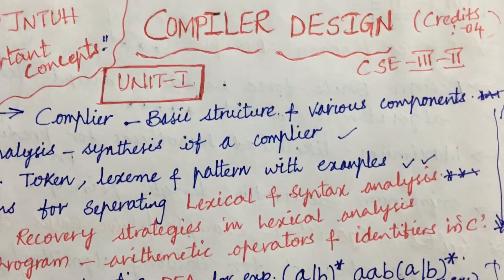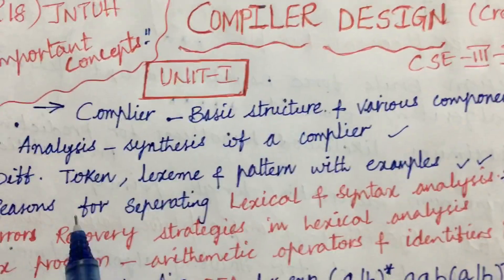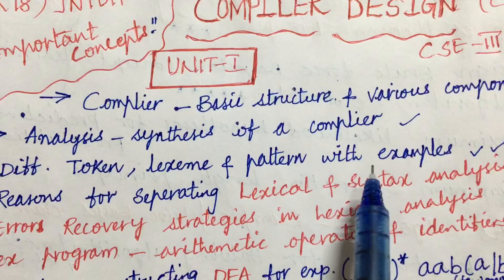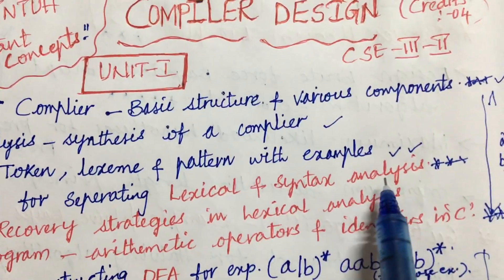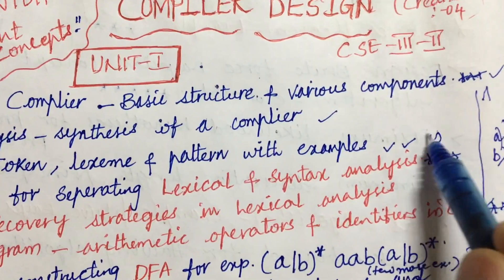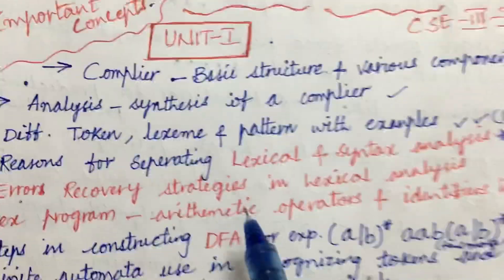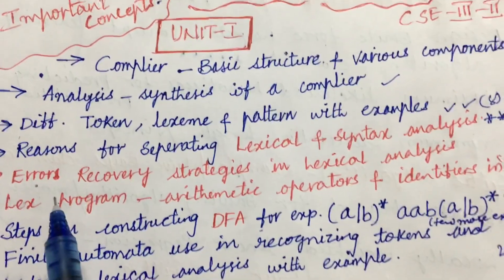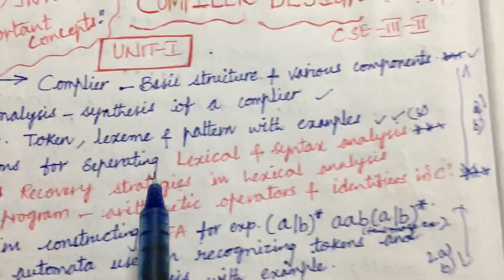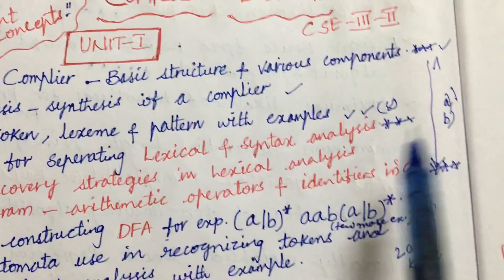Later, the analysis and synthesis of a compiler and difference between token, lexeme, and pattern with example is also one of the eight-mark questions which covers in 1a or 1b. Students make sure to work out accordingly. Later, the reasons for separating lexical and syntax analysis is asked several times in previous year question papers, and we can expect this is a gunshot question.